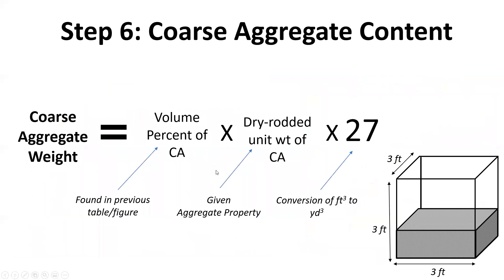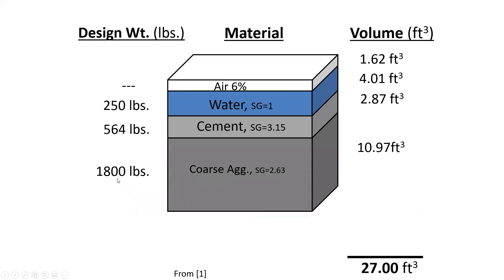Step six continued: take that 0.69 value — which is the bulk volume fraction of coarse aggregate — and multiply it by the dry-rodded unit weight of the coarse aggregate, then multiply by 27 (converting cubic yards to cubic feet). That gives you the weight of coarse aggregate per cubic yard. To find the volume, divide the weight (say 1,800 pounds) by the specific gravity (2.63) and then by 62.4, the unit weight of water, to convert from weight to volume.